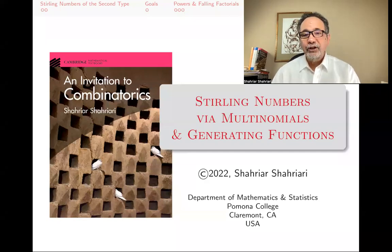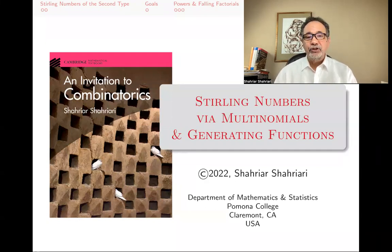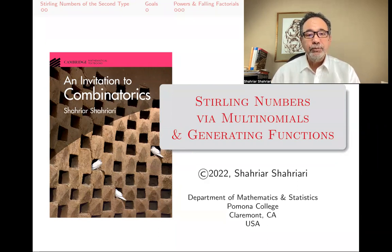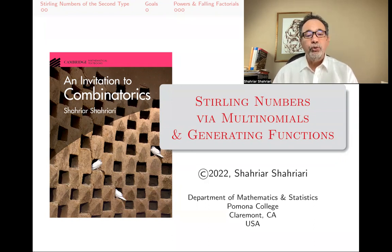Hello, my name is Shahyar Shahyari, and this is a lecture in a series of lectures on introductory combinatorics based on my book, An Invitation to Combinatorics. The subject of this lecture is Stirling numbers of the second type and finding formulas for them using multinomials and generating functions.